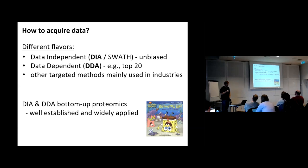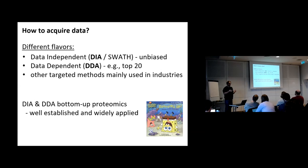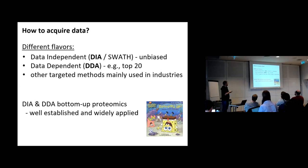Leon will later talk about DIA in the quantification part. Then there is data dependent acquisition, DDA, which for example selects the 20 highest intensity analytes for processing in the mass spectrometer. Or there are targeted methods like MRM, mainly used in industrial setups. For research, DIA and DDA bottom-up proteomics are well established and widely applied, and are probably what most of you are dealing with.